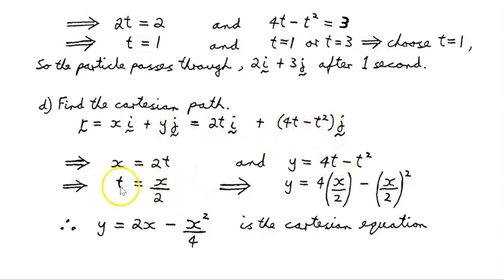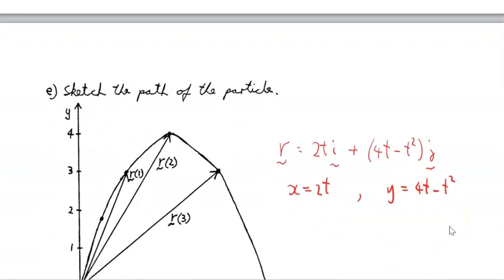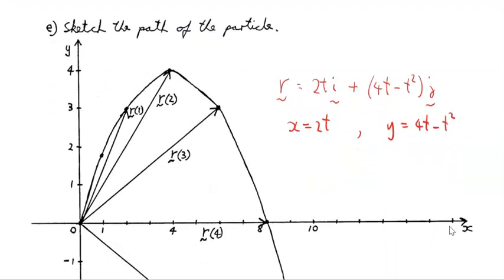But we now know from here that t = x/2. So where the t is, we can substitute x/2. And here (x/2)² all squared. Tidying that up, we have 4 divided by 2 is 2x minus x²/4. That's the Cartesian equation. And we could plot that. Let's just go one step further. Let's sketch the path of the particle.